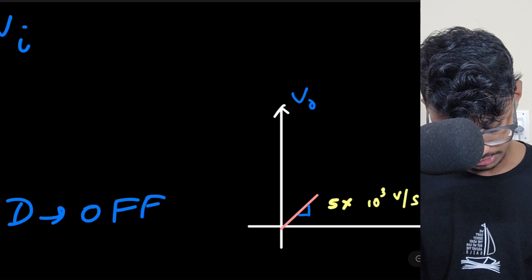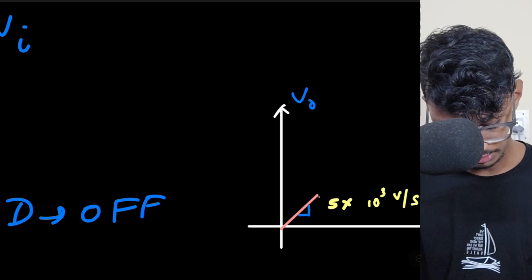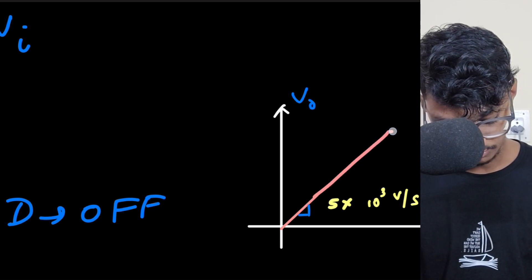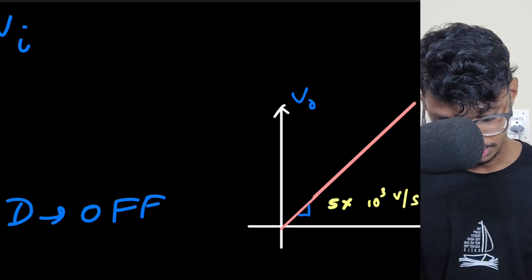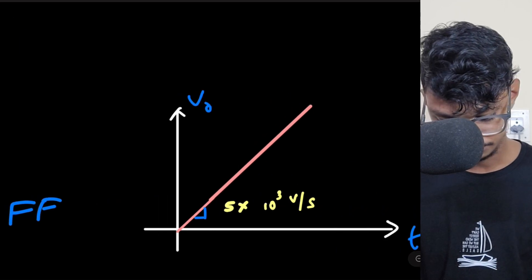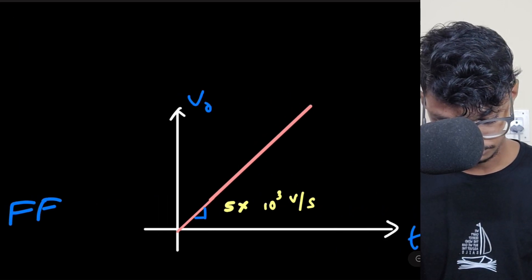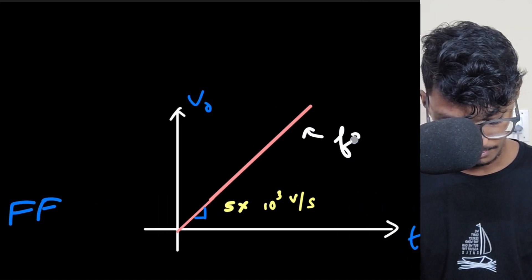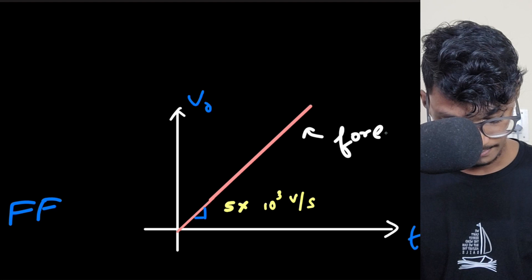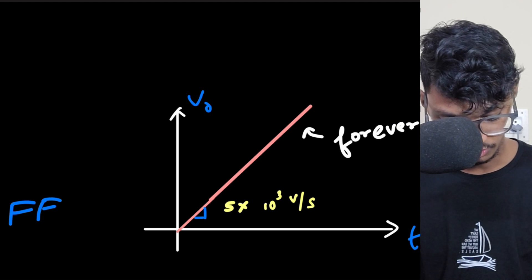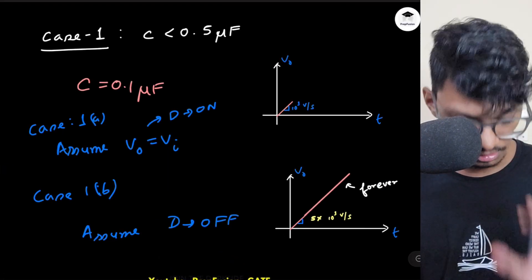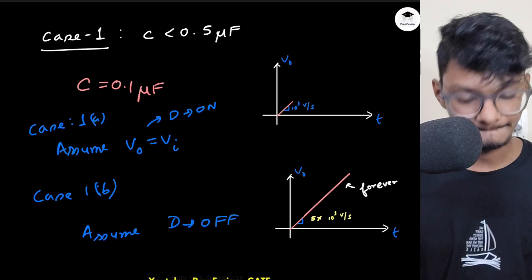In Case 1, when C < 0.5 microfarad, the n-side slope is always greater than the p-side slope, so the waveform will always be a straight line — forever.